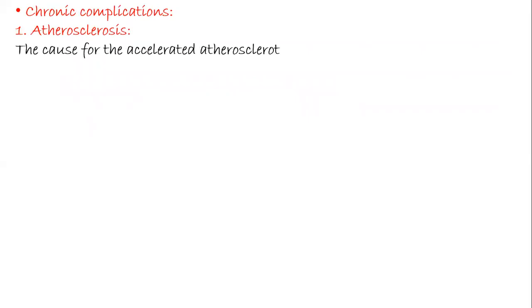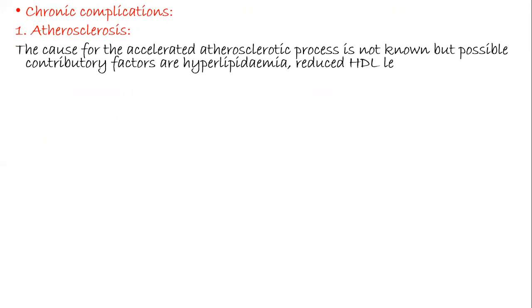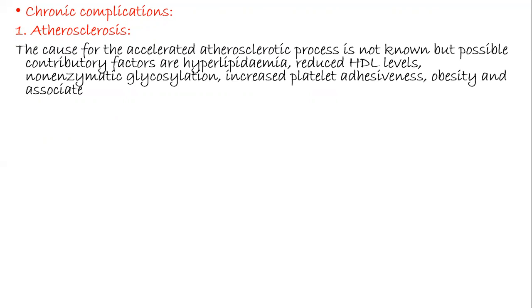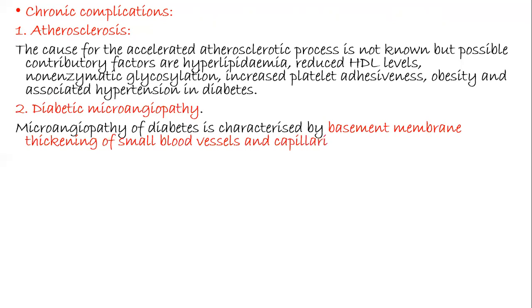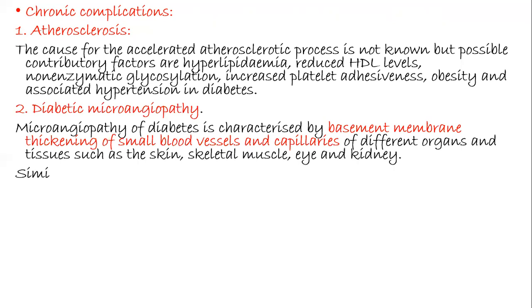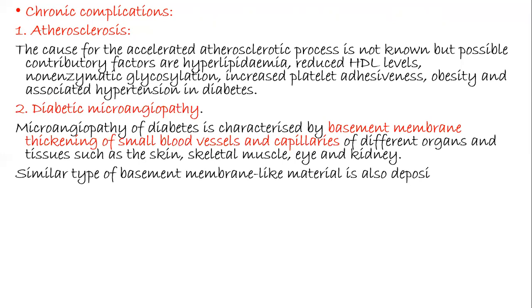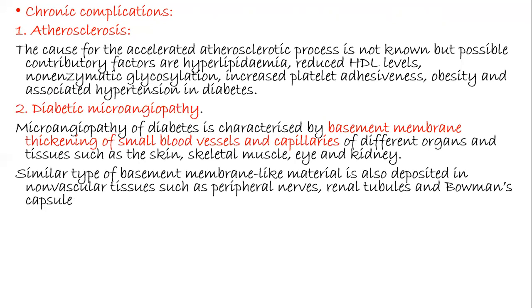Chronic complications include atherosclerosis. The cause of the accelerated atherosclerotic process is not fully known, but possible contributory factors include hyperlipidemia, reduced HDL levels, non-enzymatic glycosylation, increased platelet adhesiveness, obesity, and associated hypertension in diabetics. Diabetic microangiopathy is characterized by basement membrane thickening of small blood vessels and capillaries in organs such as the skin, skeletal muscle, eye, and kidney. A similar basement membrane-like material is also deposited in non-vascular tissues such as peripheral nervous tissue, renal tubules, and Bowman's capsule.